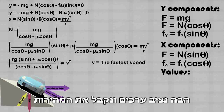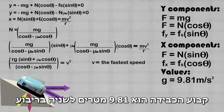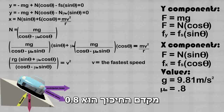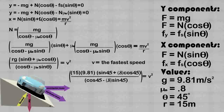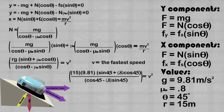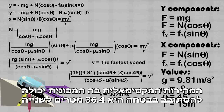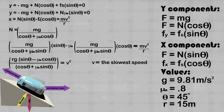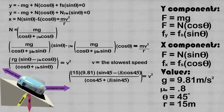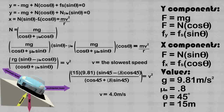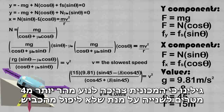Let's solve for the speed given values. The magnitude of gravity is 9.81 meters per second squared. The coefficient of static friction is 0.8. The angle of inclination is 45 degrees. And the radius of the turn is equal to 15 meters. Plugging these values into the equation for v and solving, 36.4 meters per second is the fastest speed that the car can safely go. Now let's solve for the slowest speed. We find that the car has to go faster than 4 meters per second so that it does not fall off the road.